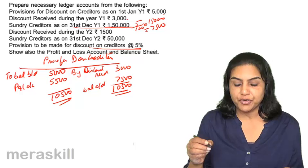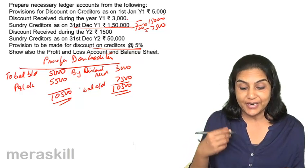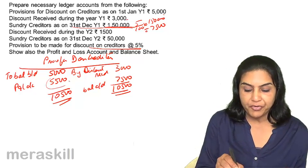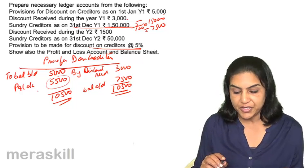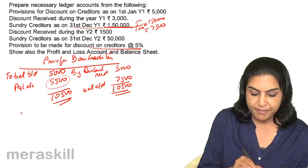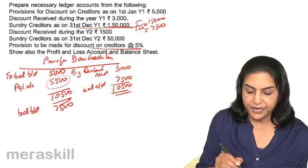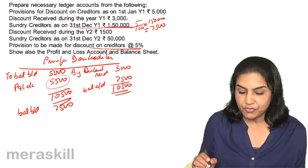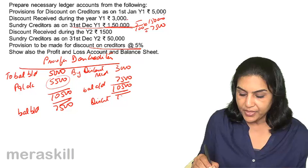Provision for discount on creditors is debited and profit and loss account is credited, so we are taking an income — a credit into the profit and loss account — of 5500 in the first year. Next year, the balance brought down is 7500 and discount received is 1500; we transfer the discount of 1500.